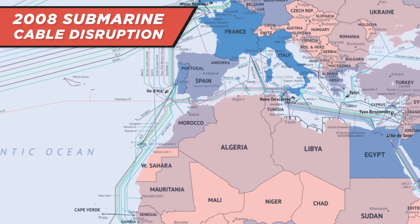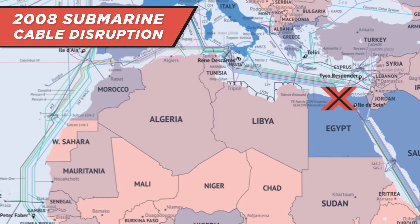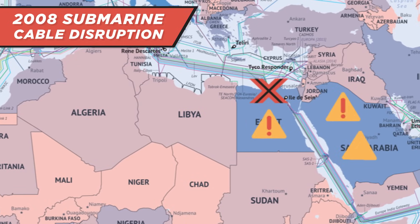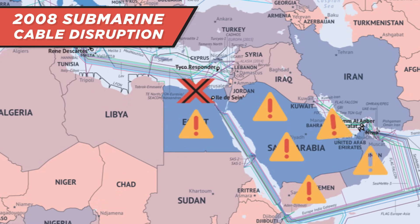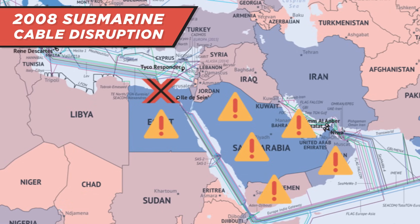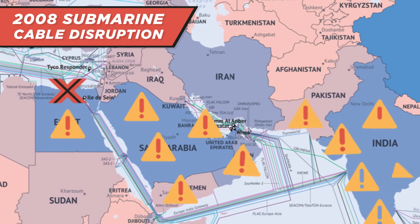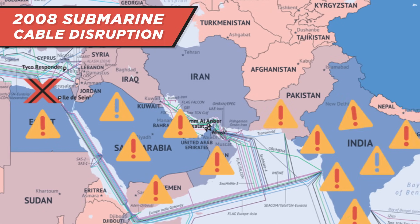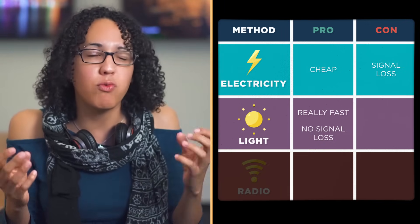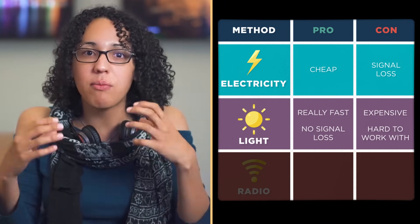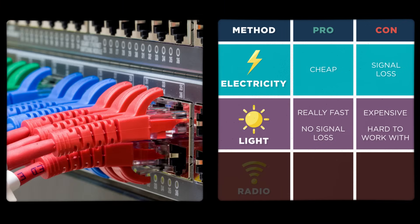In 2008, there was a cable that was actually cut near Alexandria, Egypt, which really interrupted the internet for most of the Middle East and India. So we take this internet thing for granted, but it's really a pretty fragile physical system. Fiber is awesome, but it's also really expensive and hard to work with. For most purposes, you're going to find copper cable.